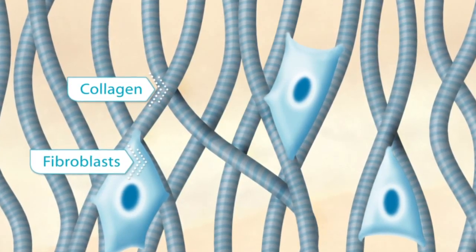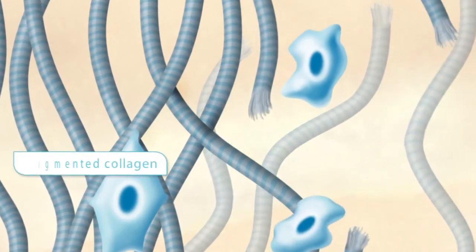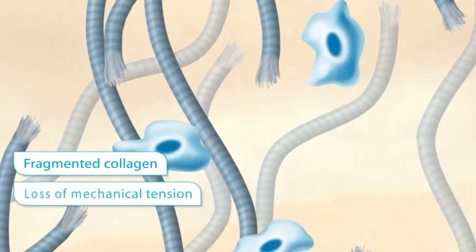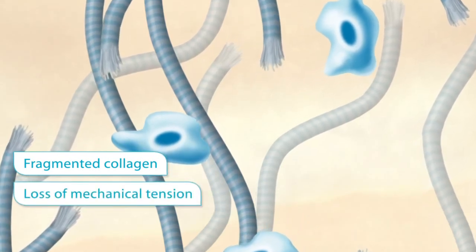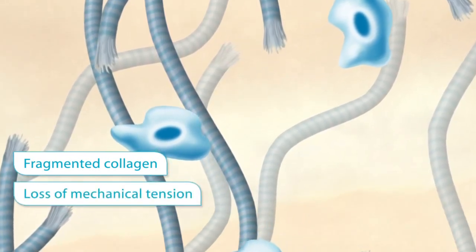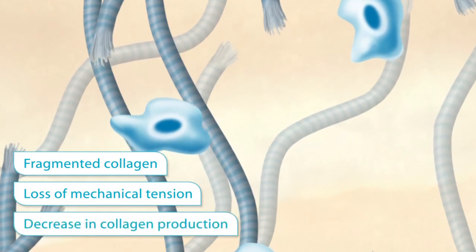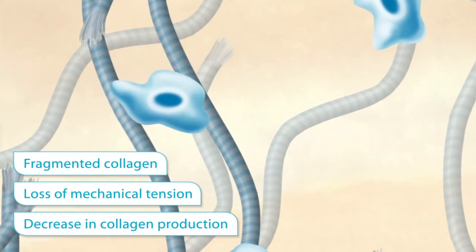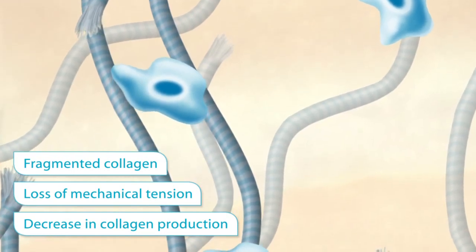During the aging process, the collagen fibers deteriorate and fragmented collagen accumulates. As a result, the mechanical tension decreases and fibroblast activity is impaired, leading to decreased collagen production and an increase in collagen-degrading enzymes. This reduces skin integrity and promotes a cycle of structural loss.